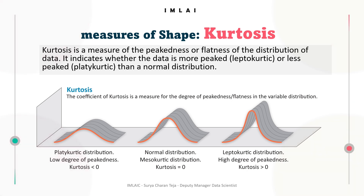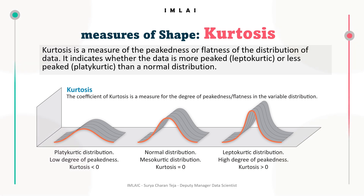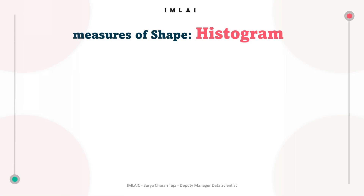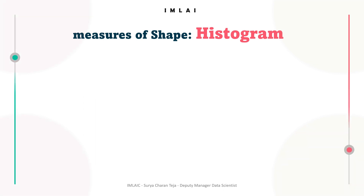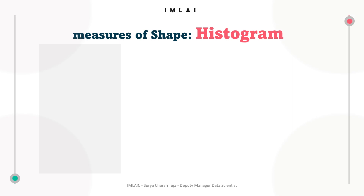Next, the fourth tool in measures of shape is the histogram. This is the last tool in measures of shape, alongside kurtosis and skewness, but it is not the least — it is widely used. A histogram is a graphical representation of the data distribution using bins or intervals. It shows the frequency or count of values falling within each bin, allowing for visual inspection of the shape, spread, and central tendency of the data.